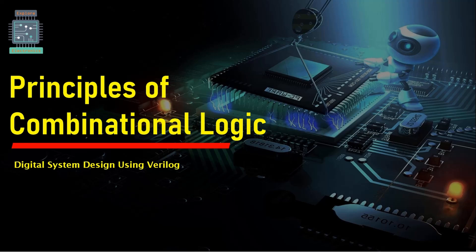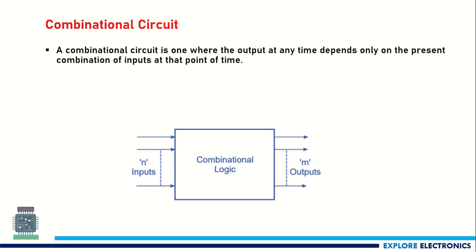Hello everyone, welcome to digital system design using Verilog lectures. In this video let us discuss combinational logic. A combinational circuit is a circuit where the output depends on the present inputs. As you can see in the block diagram, there are n inputs. If you apply those n inputs to the combinational logic, it will give m outputs.